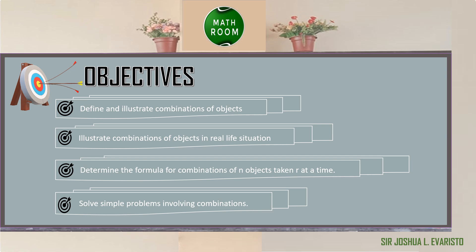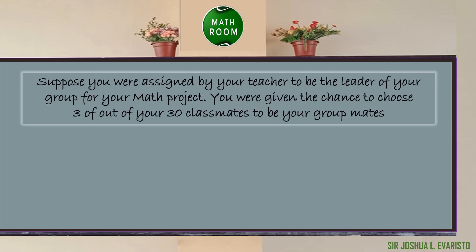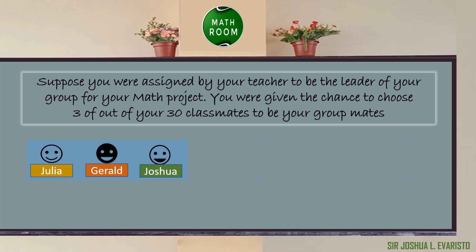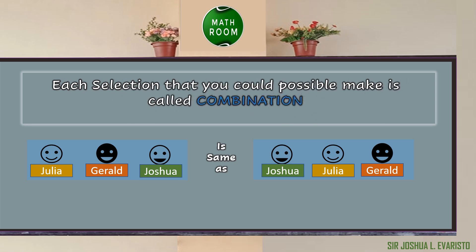Let's get started. Suppose you were assigned by your teacher to be the leader of your group for your math project. You were given the chance to choose 3 out of your 30 classmates to be your group mates. If you choose Julia, Gerald, and Joshua, does it make any difference if you choose instead Joshua, Julia, and Gerald? Of course not, because the list refers to the same people. Each selection that you could possibly make is called a combination, so in this case, that is just one combination.